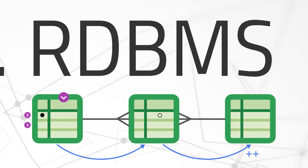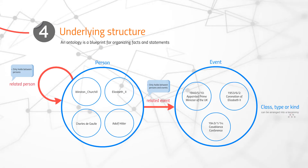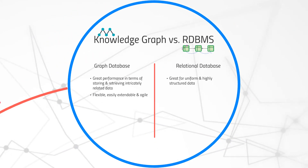In graph databases, because data is stored as triples, where the schema definition is itself just a triple for a piece of data, this makes graph databases incredibly flexible, extendable, and agile. Want to add new class info for a dataset? No problem — it's only a few triples away. Contrast that to the rigorous and enduring tabular schemas in RDBMS, which need to be defined and adhered to from the onset, and are not meant to rapidly change over time.